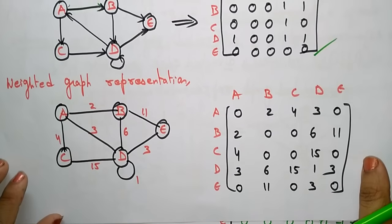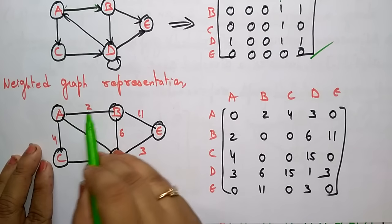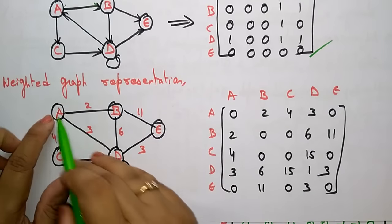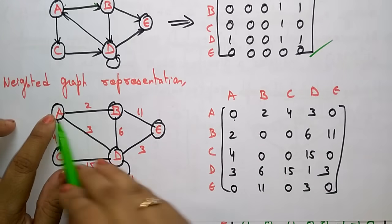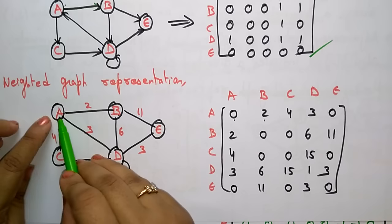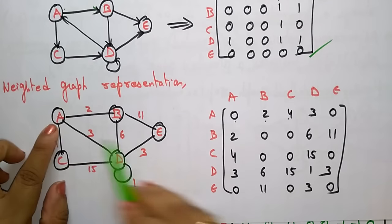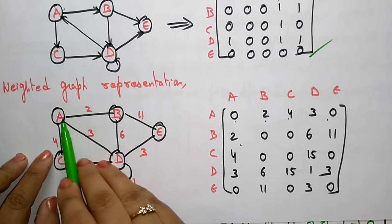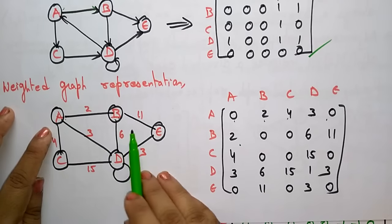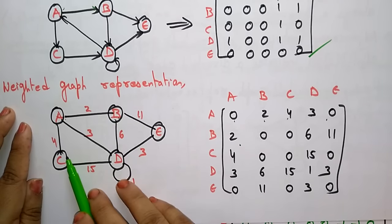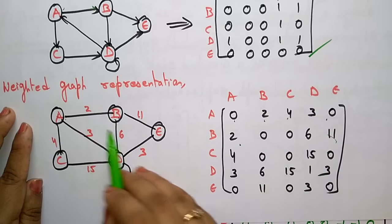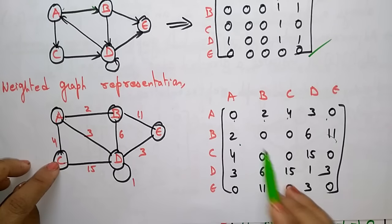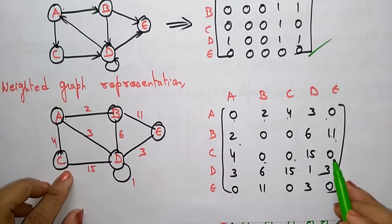Now let me explain the weighted graph representation. A weighted graph means you keep weights on the edges, and this is an undirected graph. A to a - no weight, 0. A to b - weight is 2. A to c - weight is 4. A to d - weight is 3. A to e - no edge, 0. B to a - 2, because this is undirected so a to b and b to a are both possible. B to b - no loop. B to c - no connection. B to d - 6. B to e - 11. C to a - 4. C to b - no connection. C to c - no connection, both 0. C to d - 15. C to e - no connection.